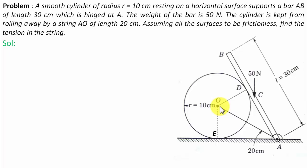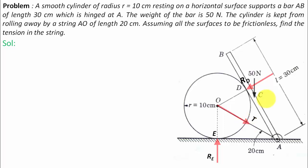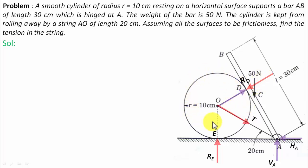The forces acting on the cylinder are: at point of contact E, normal reaction RE; at point of contact D, normal reaction RD; and tension T in the string. The forces acting on the bar are: RD acting on it from the cylinder (by Newton's third law, equal and opposite), and since A is a hinged support, there are two reaction forces HA and VA.